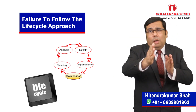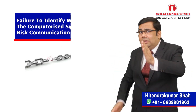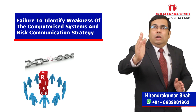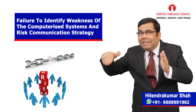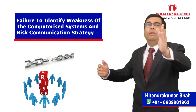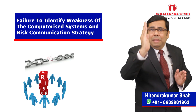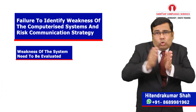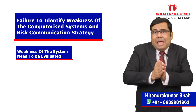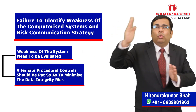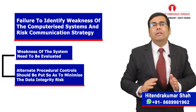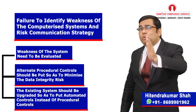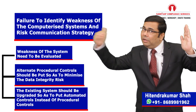The last but not least common problem is addressing the weaknesses of computerized systems and the communication strategy for identified risks. The computerized system may have loose threads or weaknesses identified during risk assessment and validation activity. Due to these weaknesses, there may be data integrity risks. Such weaknesses need to be evaluated, and as an immediate corrective action plan, alternate procedural controls should be put in place to minimize the data integrity risk. As a long-term action plan, the existing system should be upgraded to implement automated controls instead of procedural controls.